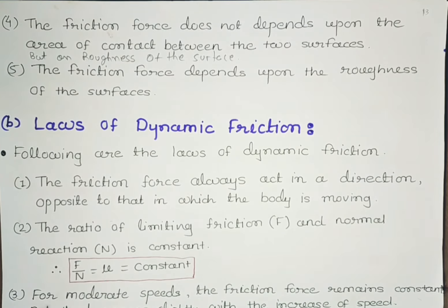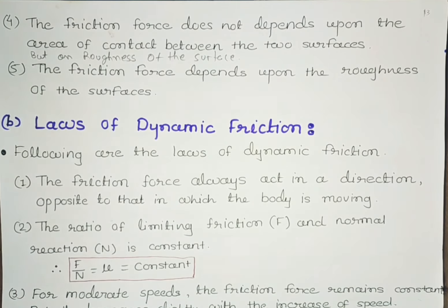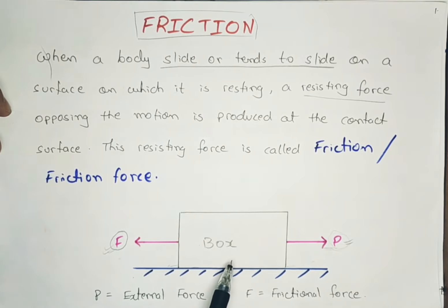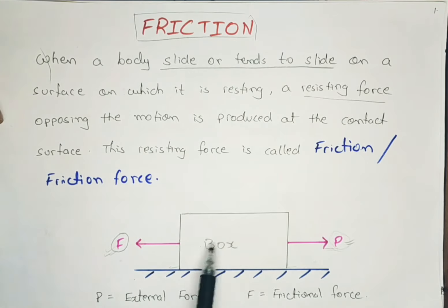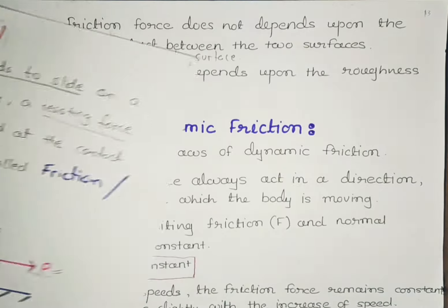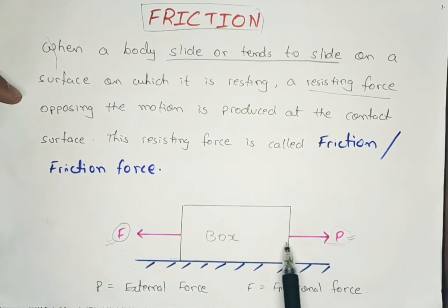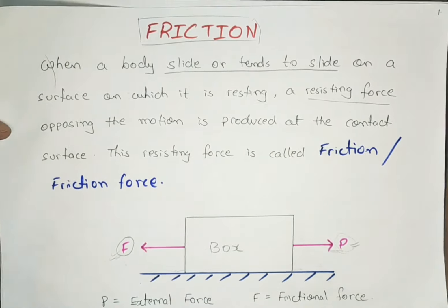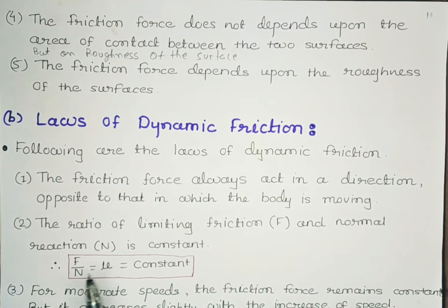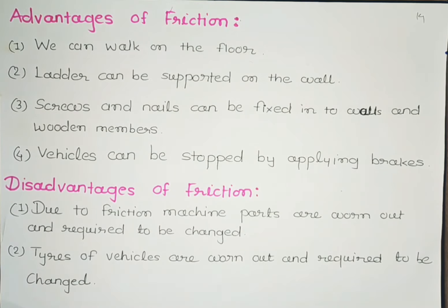The third law of dynamic friction states that for moderate speeds, the friction force remains constant, but it decreases slightly with the increase of speed. That means if we consider a box moving with constant velocity, the frictional force experienced by this box will also be constant. But increasing the speed of this box will decrease the friction — by increasing the speed, the frictional force will slightly decrease.